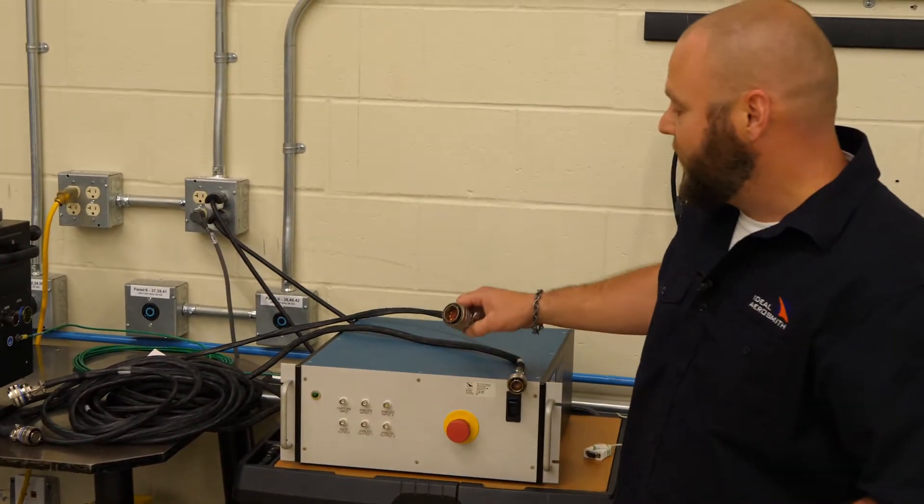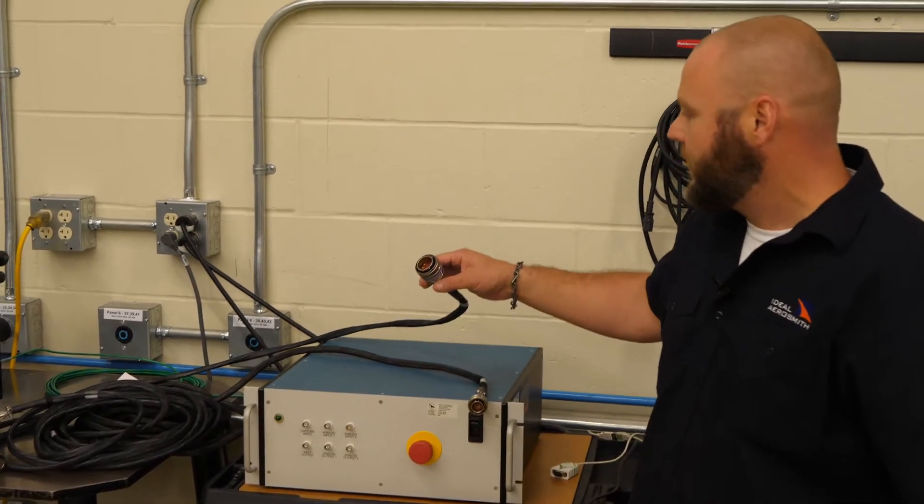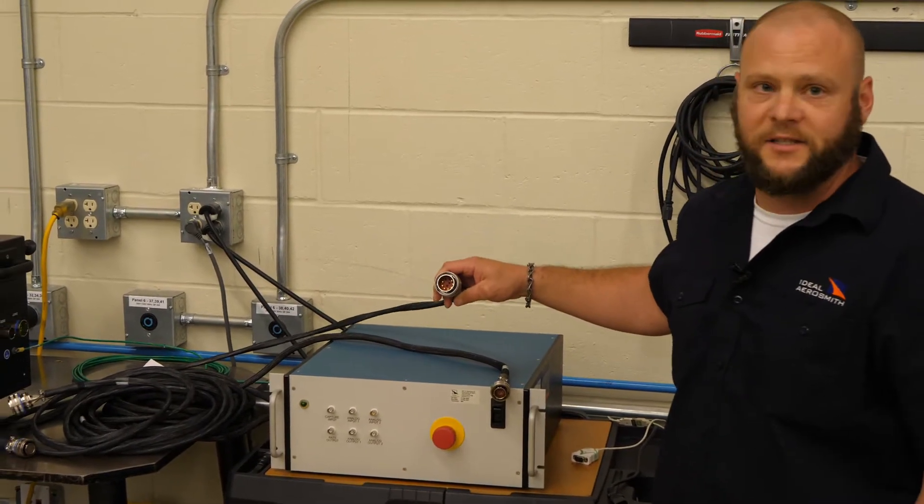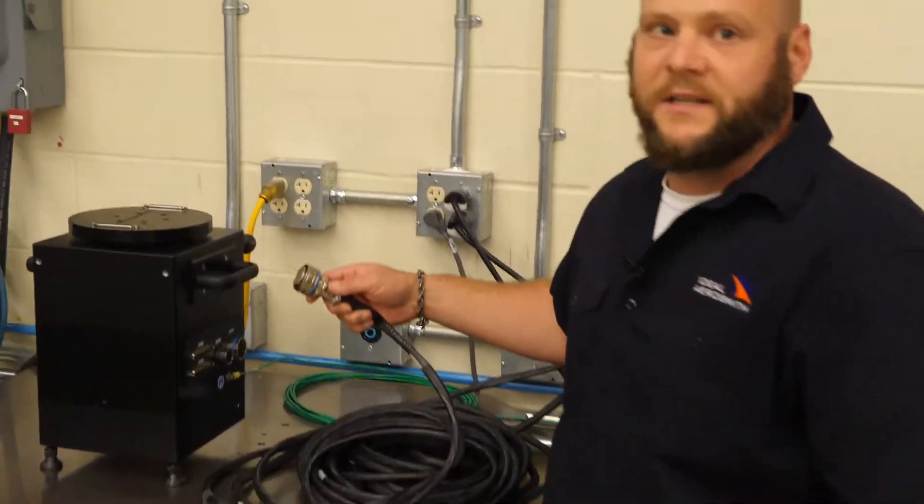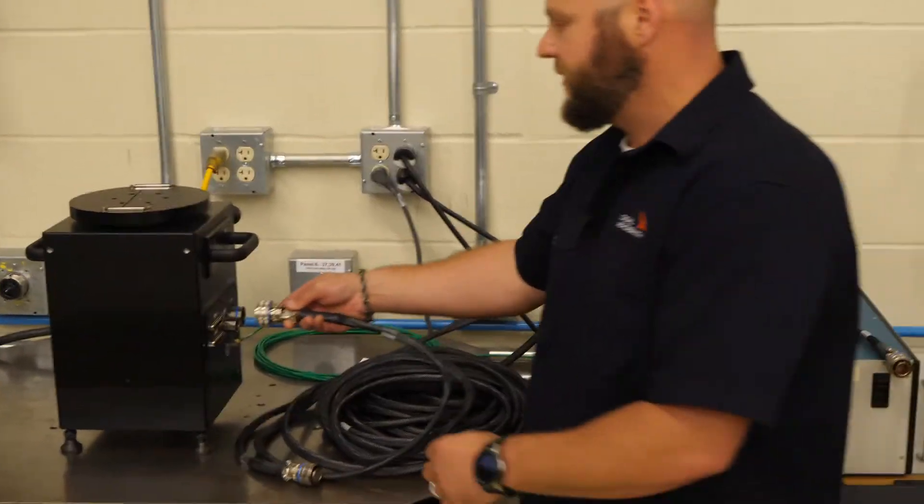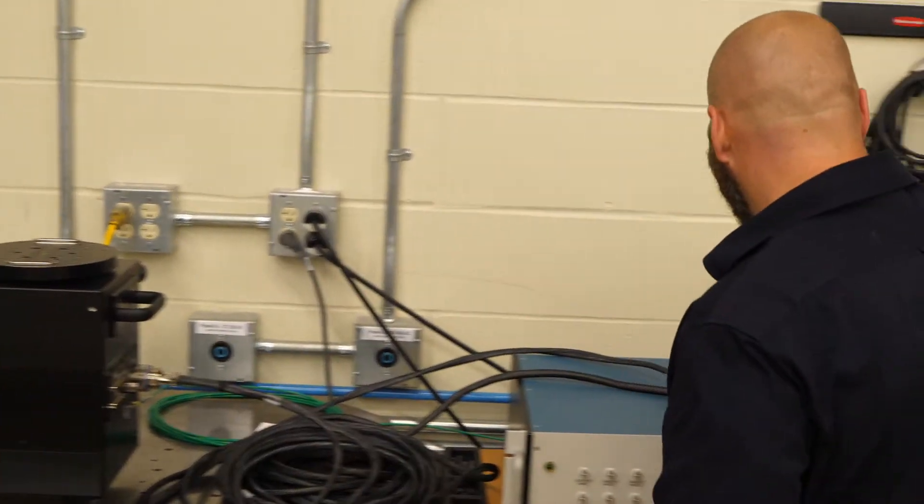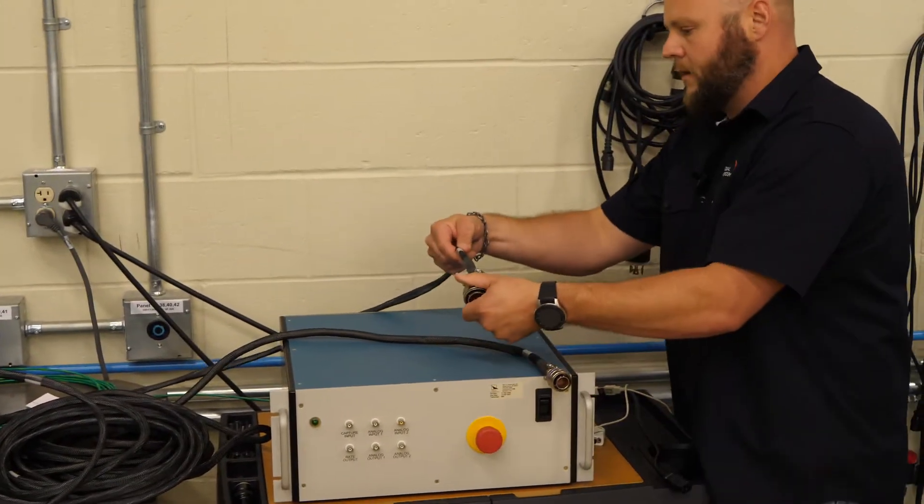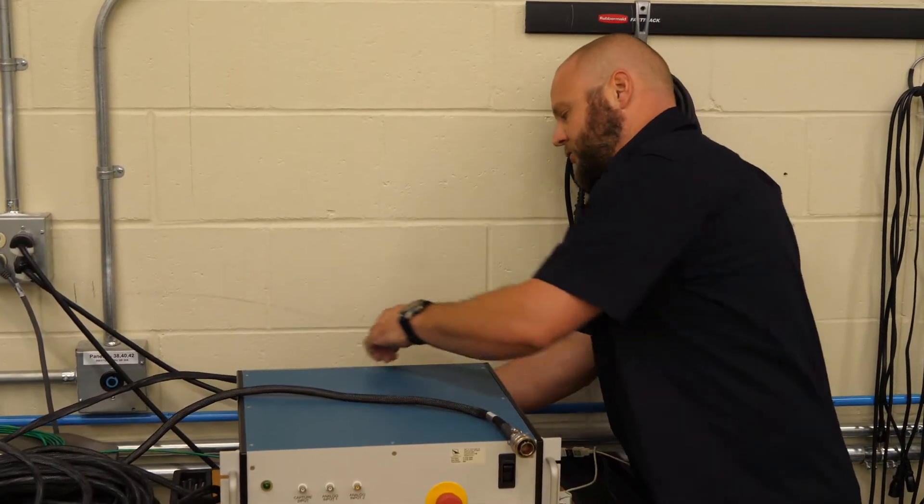The next step will be to connect the rate table to your controller. Your rate table will come with three harnesses. The first is W201, which is the larger connector, is your axis power harness. You'll connect P260, J260 of the harness to P260 of the rate table, and P360 of the harness to J360 of the controller.